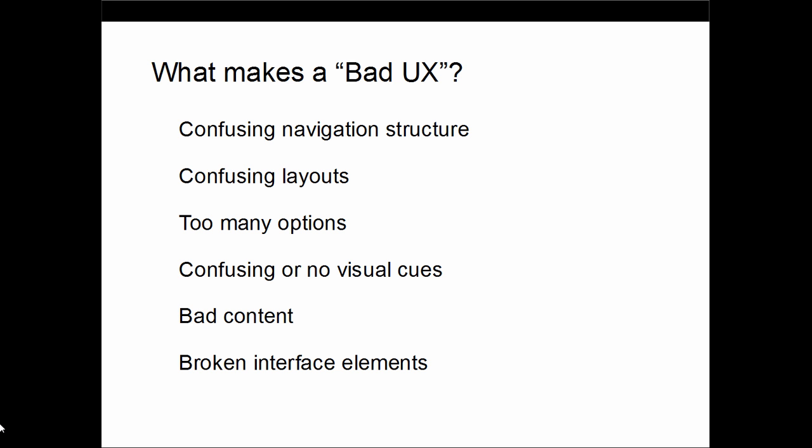On the road to creating a great user experience, we need to consider what makes a bad one. If a user is confused by the navigation and layout, that's a clear indication of a poor design. Providing the user with too many options in any given view also creates confusion. The absence of visual cues is another major pitfall — it's visual cues that tell the user how to act, and this is something we'll give attention to later in the course. If the content is bad, the user will not find value in the experience. And finally, if things are broken and the application cannot be used as intended, the user experience has failed.